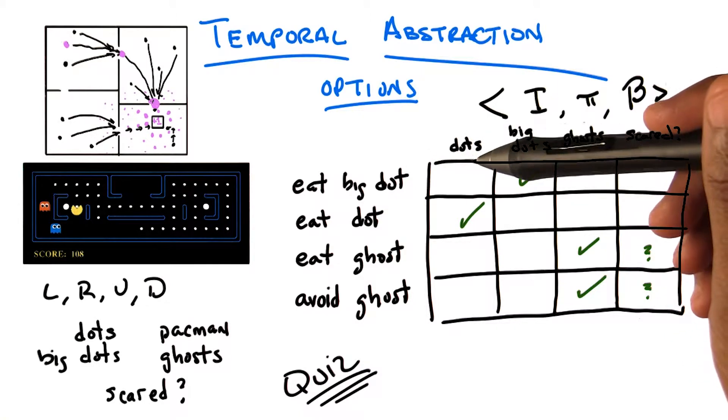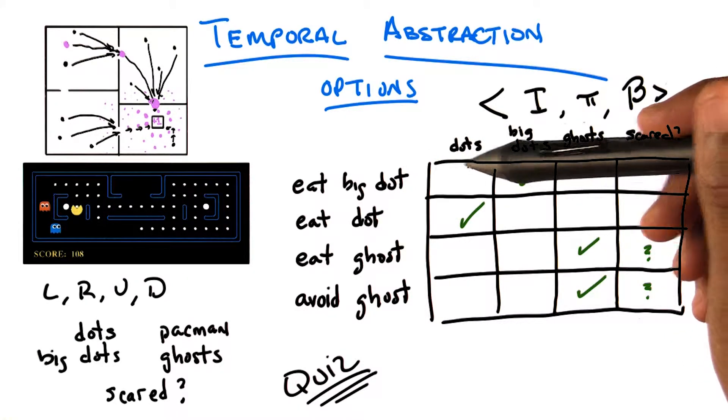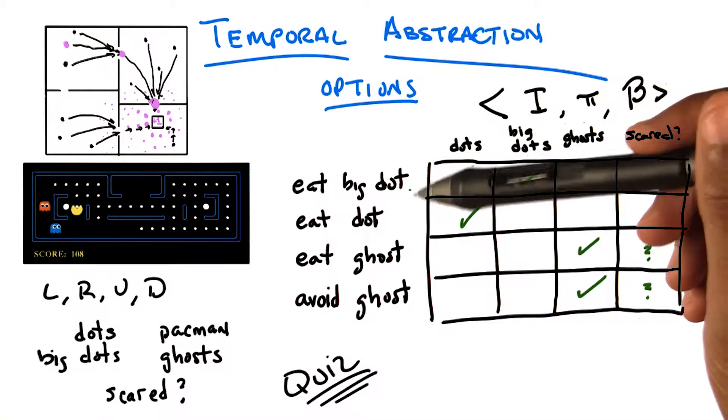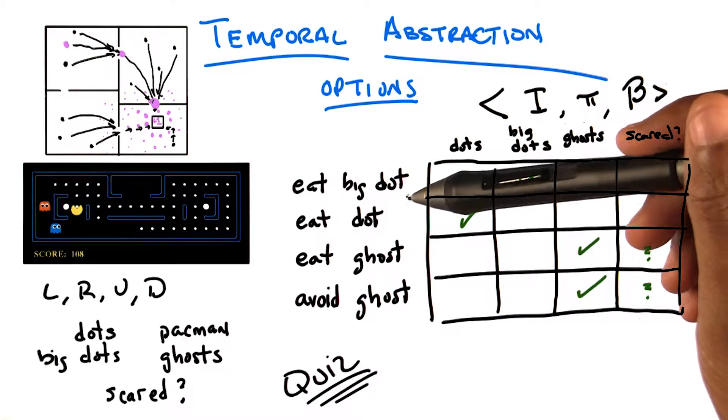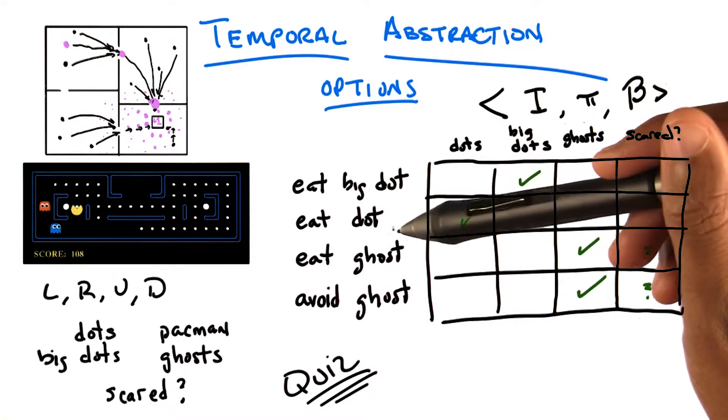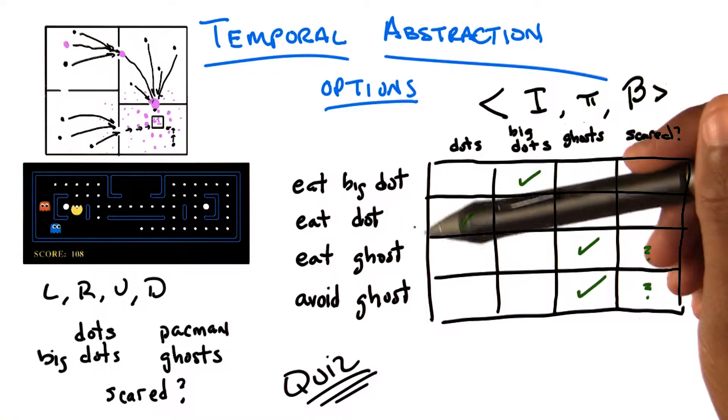Although, if I know where the dots are, then I might choose to eat the big dots in such a way that I eat a bunch of little dots as well. But this points out two things. One, it points out that if my options are not written in exactly the right way, then I may not be able to find an optimal policy.